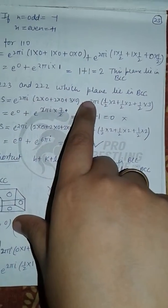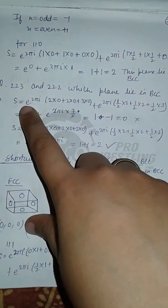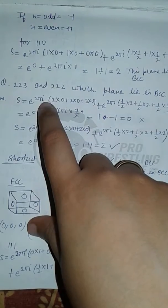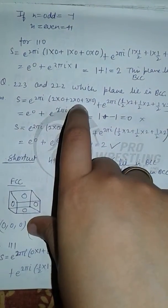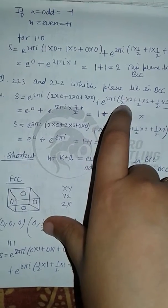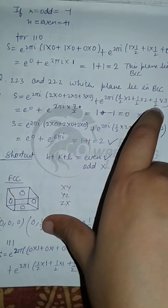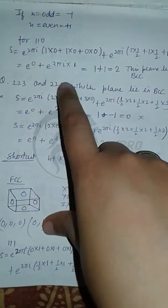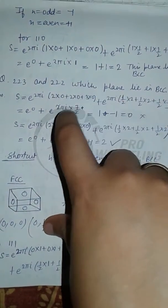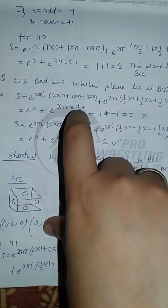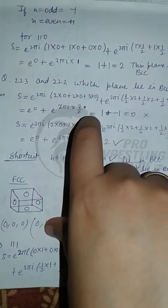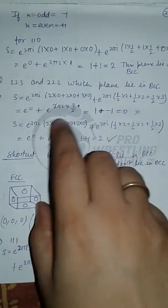For plane (2,2,3) in BCC: S equals e to the power 2 pi i (2·0 + 2·0 + 3·0) plus e to the power 2 pi i (1/2·2 + 1/2·2 + 1/2·3). The first term is e to the power 0, which equals 1, and the second term is e to the power 2 pi i into 7/2, which equals minus 1. So 1 minus 1 equals 0, meaning this plane doesn't lie in BCC.